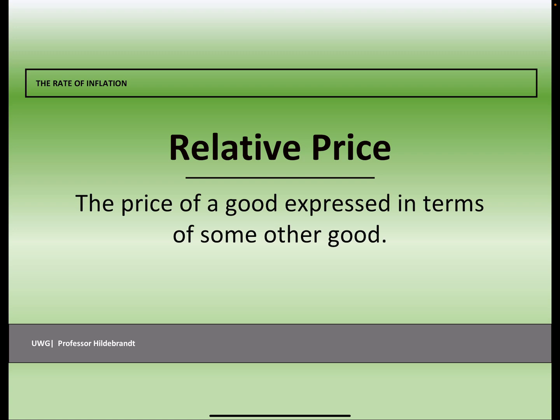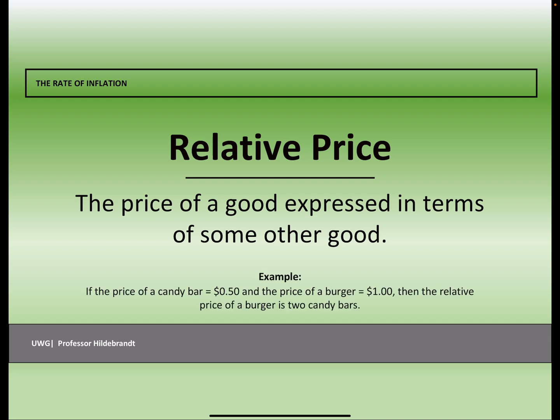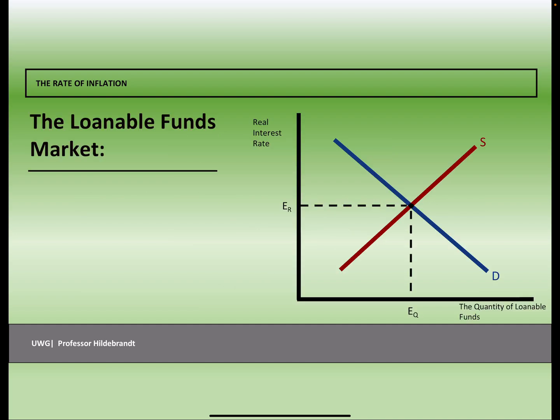There's a part in the chapter that talks about relative price. Relative price is simply the price of a good expressed in terms of another good. If the price of a candy bar is $0.50 and a burger costs $1, then the relative price of a burger is two candy bars.